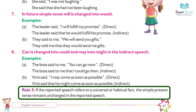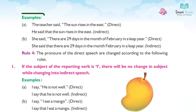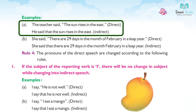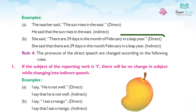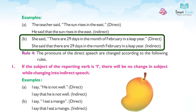Examples for Rule 3: (a) The teacher said, 'The sun rises in the east.' (Direct) → He said that the sun rises in the east. (Indirect) (b) She said, 'There are 29 days in the month of February in a leap year.' (Indirect — tense unchanged as universal fact.)